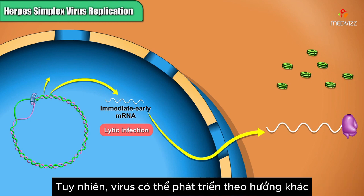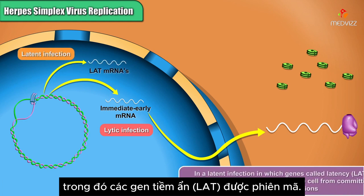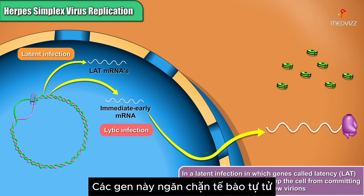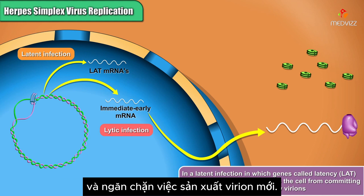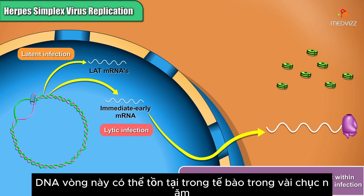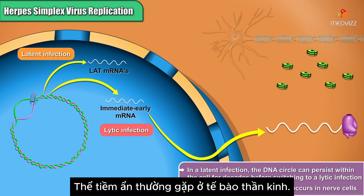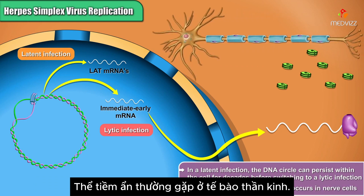However, the virus could have entered a pathway called a latent infection, in which genes called latency, or LAT genes, are transcribed and keep the cell from committing suicide and from producing new virions. In a latent infection, the DNA circle can persist within the cell for decades before switching to a lytic infection. Latent infection most commonly occurs in nerve cells.